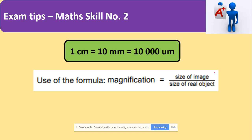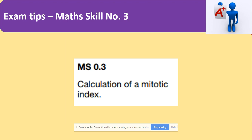Next is magnification. The key rule is knowing how to convert units: 1 centimetre = 10 millimetres = 10,000 micrometres. The magnification formula is: size of image (measured with a ruler on the paper) divided by the real object size. So: ruler measurement divided by real size gives you magnification.